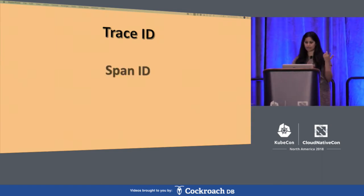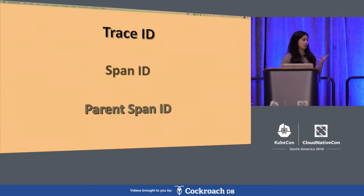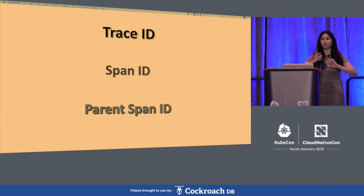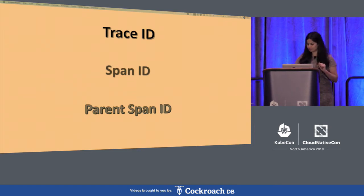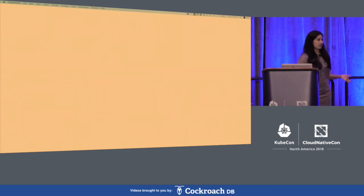Each service is uniquely identified by a Span ID, which is the second ID. The third ID is the Parent Message ID. This ID helps you identify who talks to whom — it sets the relationship between services. So with these three IDs, we got a way of doing diagnostics, which Google called distributed tracing.